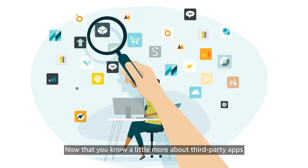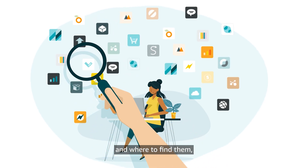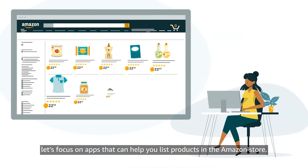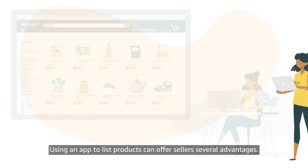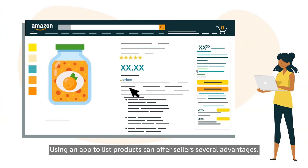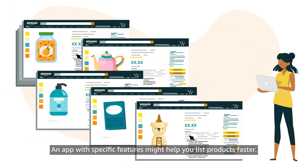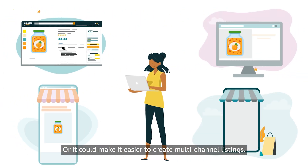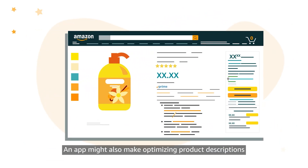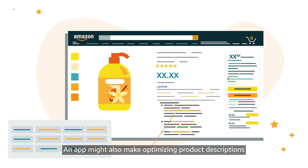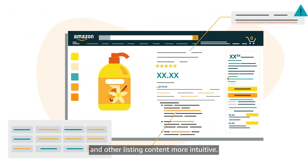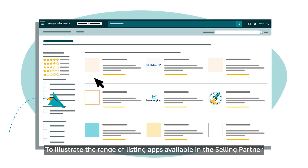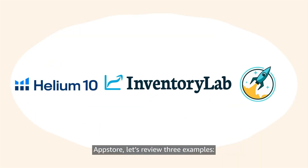Now that you know a little more about third-party apps and where to find them, let's focus on apps that can help you list products in the Amazon Store. Using an app to list products can offer sellers several advantages. An app with specific features might help you list products faster, or it could make it easier to create multi-channel listings. An app might also make optimizing product descriptions and other listing content more intuitive. To illustrate the range of listing apps available in the Selling Partner App Store, let's review three examples: Helium 10, Inventory Lab, and Zentail.